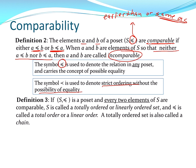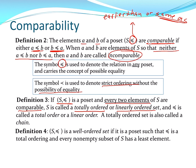If S with the 'earlier than or same as' relation is a poset where every two elements are comparable, we call S a totally ordered or linearly ordered set. If S with the relation is a total ordering and every non-empty subset of S has a least element according to the relation, then we say it is well-ordered.